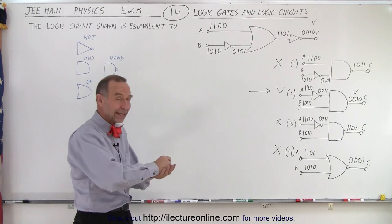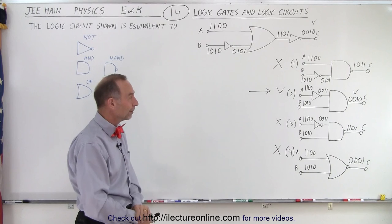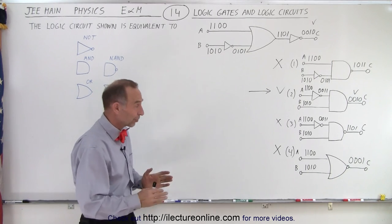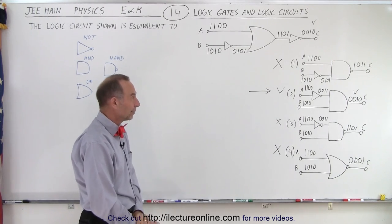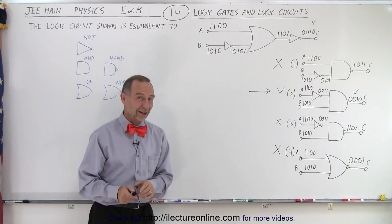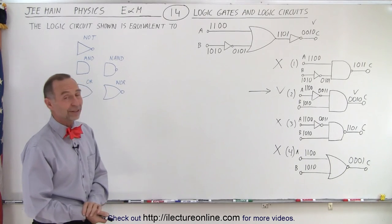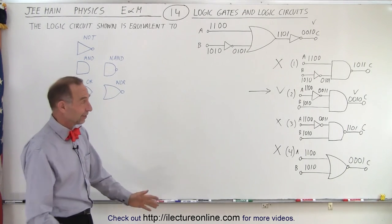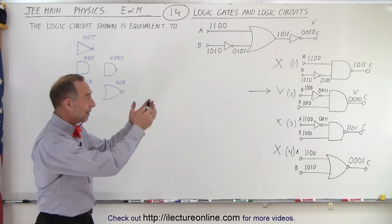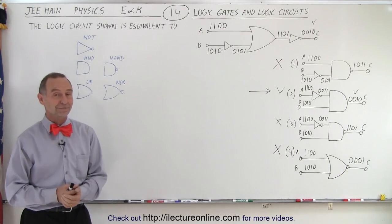The key takeaway: a NAND gate gives the opposite of AND, and a NOR gate gives the opposite of OR. A NOT gate simply turns a 1 into a 0 and a 0 into a 1. It's a bit surprising to see logic gates on a JE Main test, but now you know — make sure to study the basics of logic gates as part of your JE Main preparation.